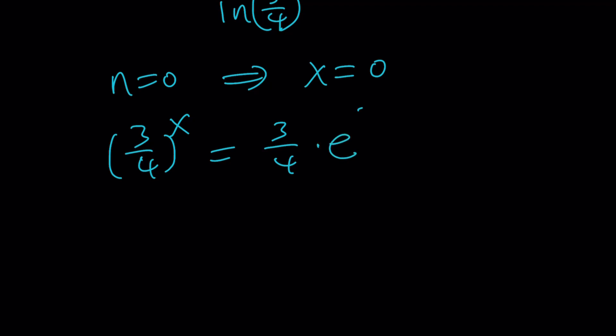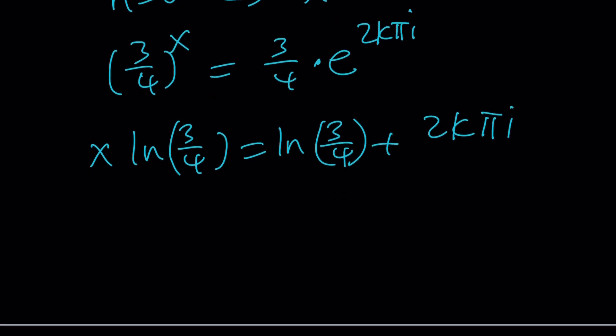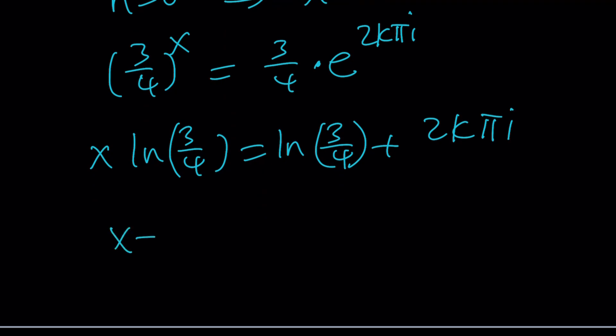x ln 3 fourths is going to be ln 3 fourths plus 2k pi. After taking care of all the logarithmic rules and stuff, this is what we're going to get. And upon division by ln 3 fourths, because this is going to be 1 plus 2k pi over ln 3 fourths. And then you're going to multiply by i.